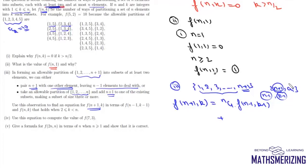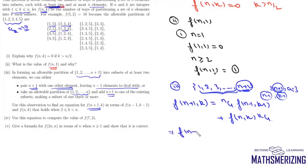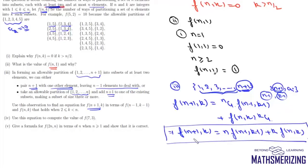Alternatively, we can take an allowable partition of {1 to n} into k subsets, done in f(n,k) ways, and then add n+1 to any one of the k existing subsets, which can be done in k ways. This gives the recurrence relation: f(n+1, k) = n·f(n−1, k−1) + k·f(n, k). Using this recurrence relation we can find higher values of f(n,k).